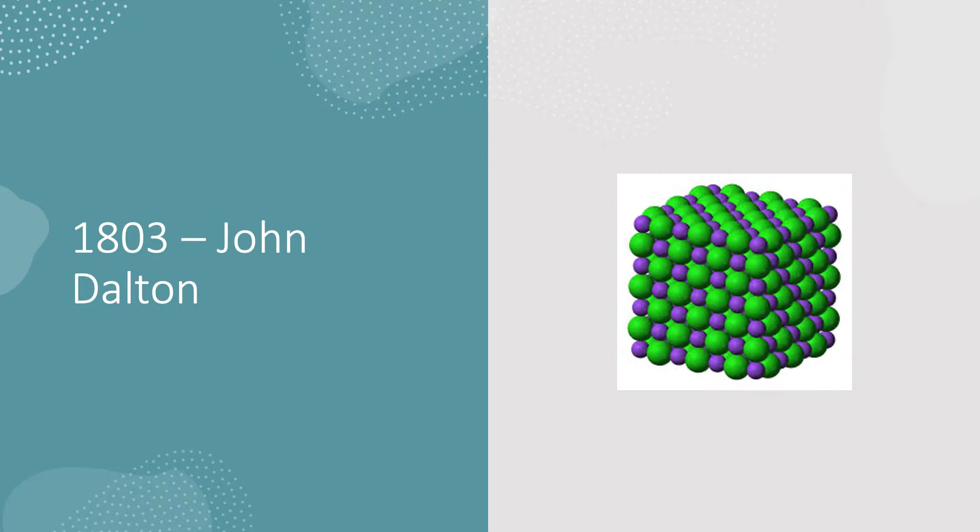Starting with John Dalton in 1803, he figured out that there were these spherical balls in the atmosphere which are all identical and each of these balls are atoms. So that's all we know at the moment.